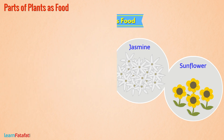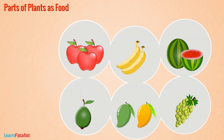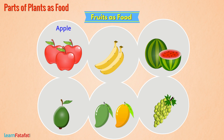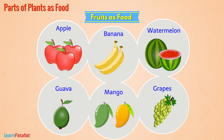We all like fruits. Some are sweet, some are sour. They are also our food. Examples are apple, banana, watermelon, guava, mango, grapes, etc.